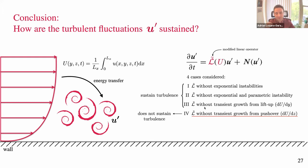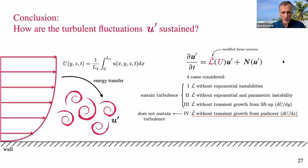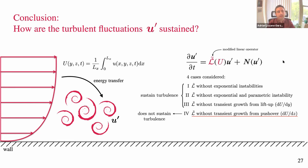Thanks very much, Adrián — that's a fascinating conclusion. I actually thought the lift-up would be the most essential one, so I'm surprised it's the pushover, since that relies on the spanwise structure and mean profile. Adrián clarifies: the lift-up is actually important for the base flow — to sustain the base flow, you need lift-up. But in this decomposition, the lift-up is not needed to sustain U prime specifically. By imposing U from a stored simulation, the base flow doesn't die, which is what allows this conclusion.